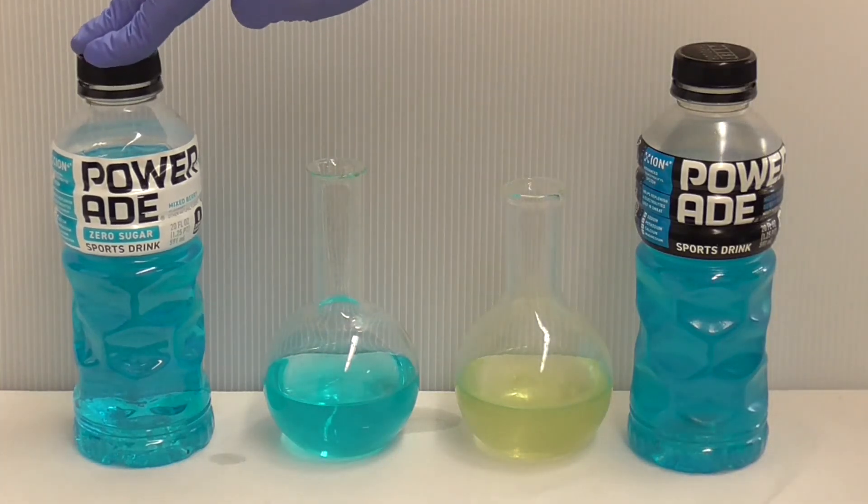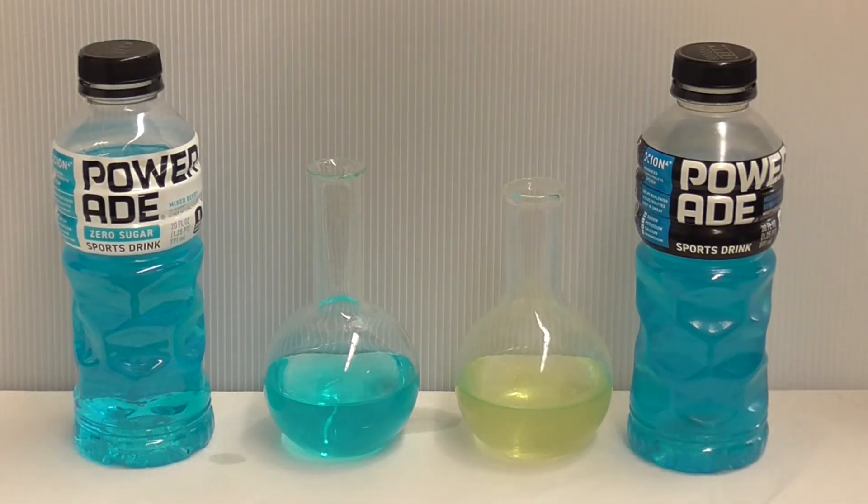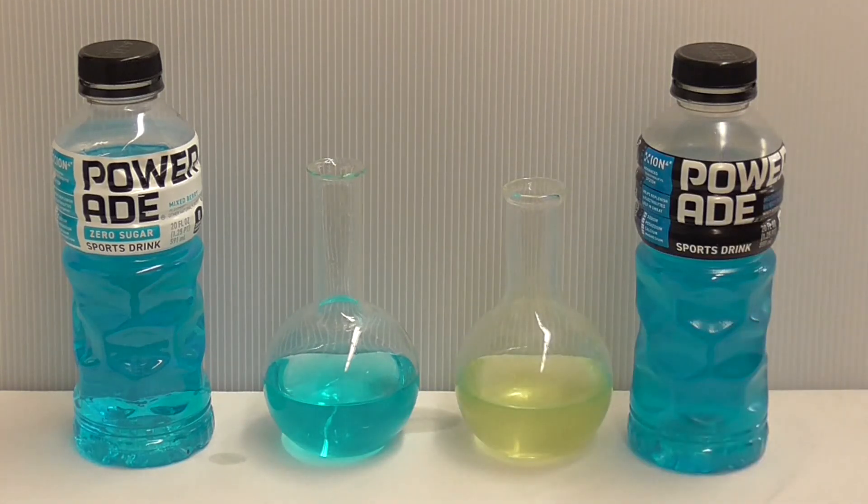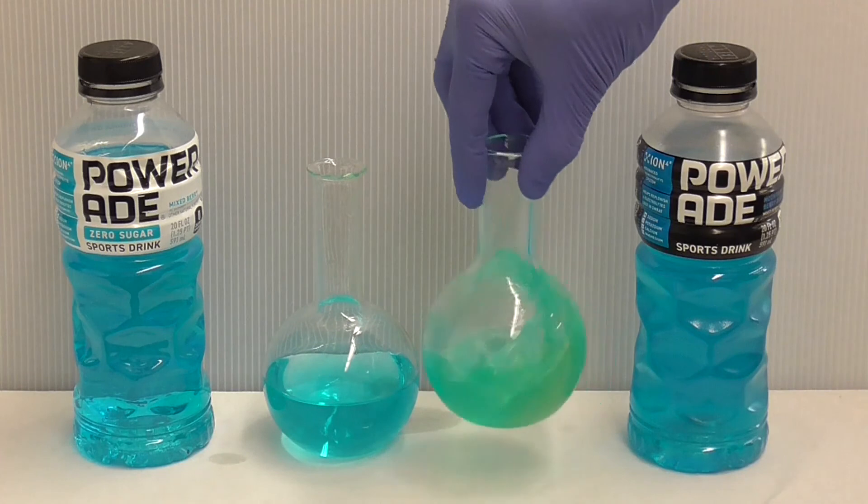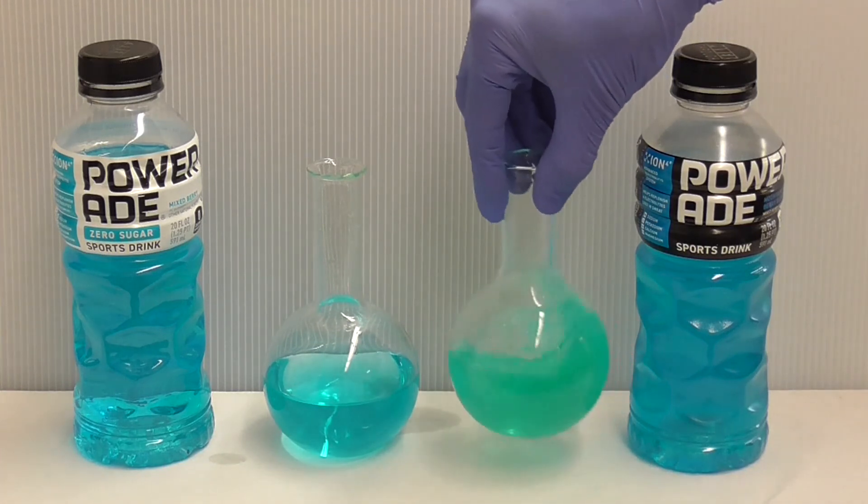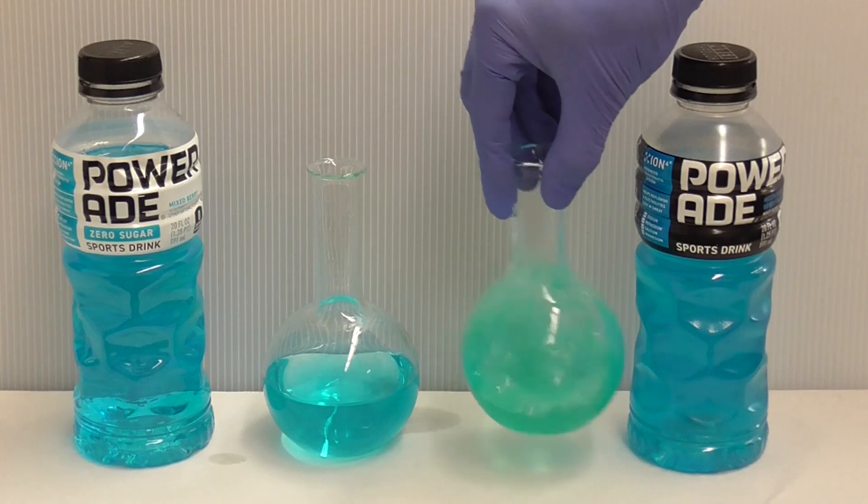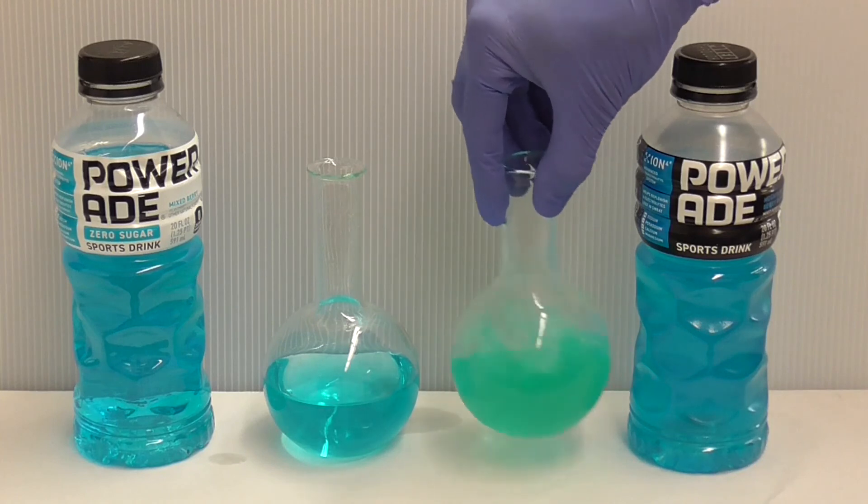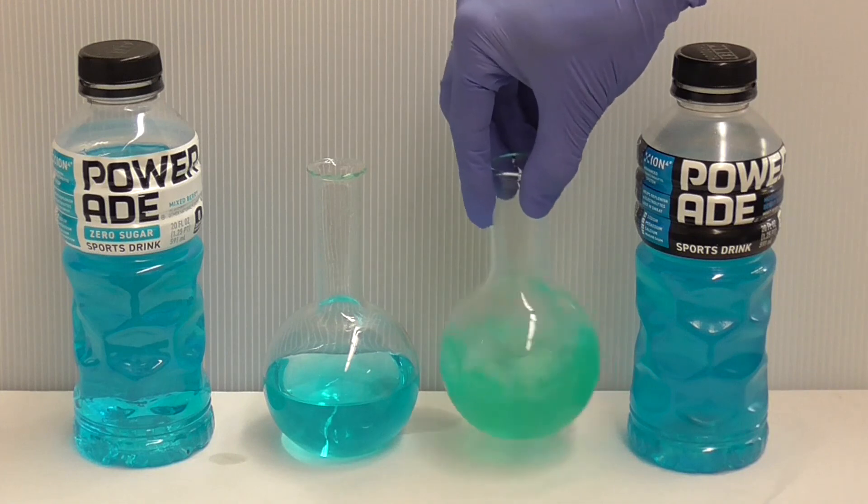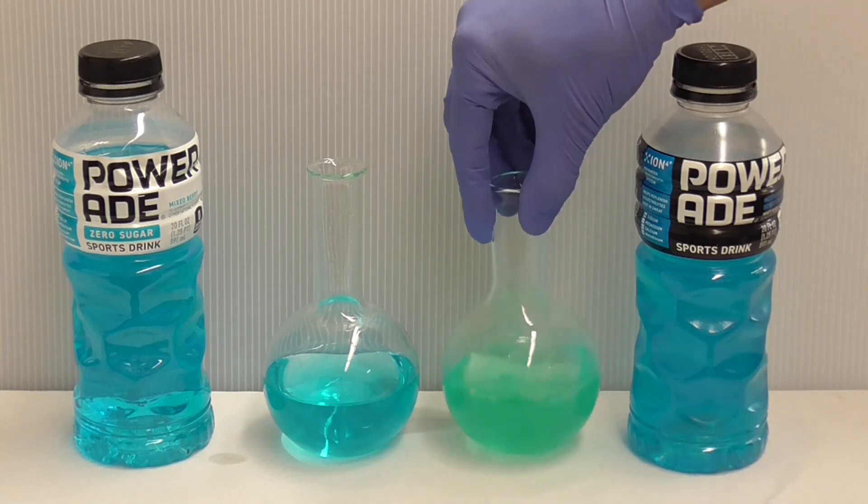In the sugar-free PowerAid there's no sugar around so the blue dye cannot get reduced to the colorless product. Giving this a shake we introduce oxygen into the mixture and that's going to oxidize the colorless form of the blue dye back to the blue form and we get a green color because the yellow product of glucose and the blue dye makes a green color.